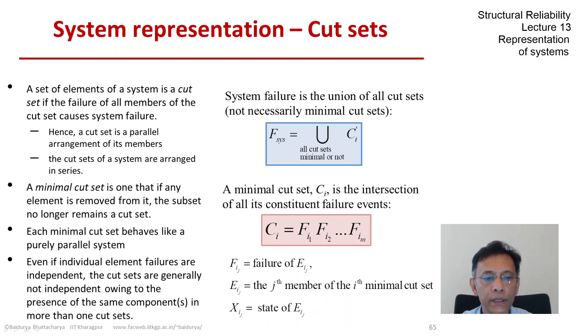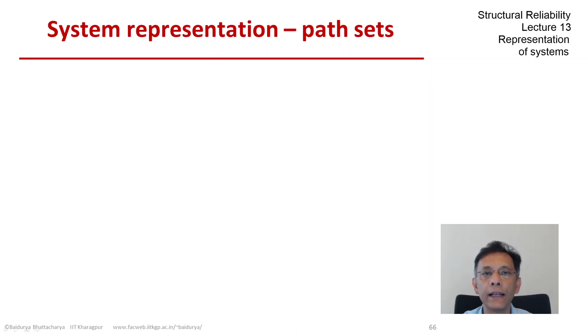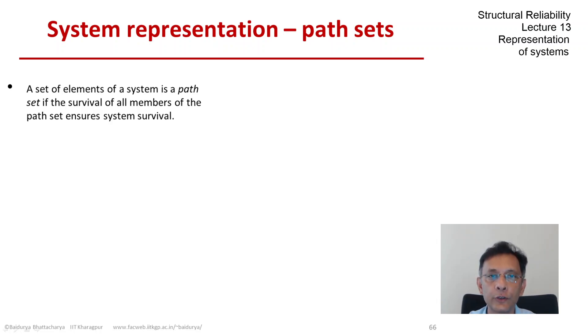Now, along with the cut set, there is a dual way of defining, of representing systems, and that is through path sets. So if we just switch the logic, a set of elements is a path set if the survival of all members of that path set implies system survival.